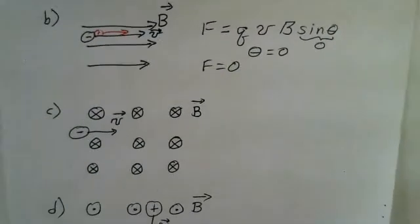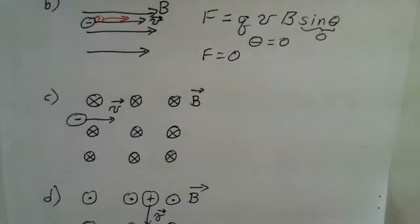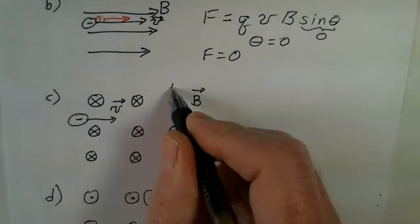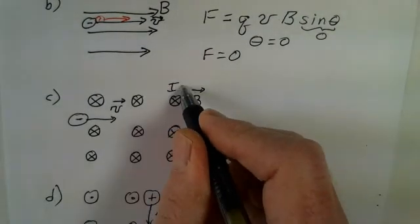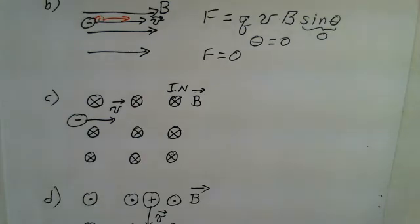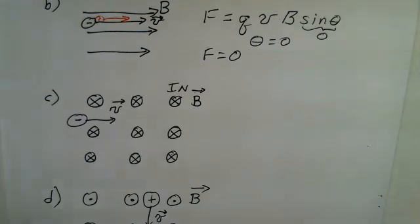Example C. Here we have a magnetic field going into the paper — that's the meaning of the circle with an X in it; you're looking at the tails of the vector. We have the magnetic field going in, and a negative particle traveling off to the right.